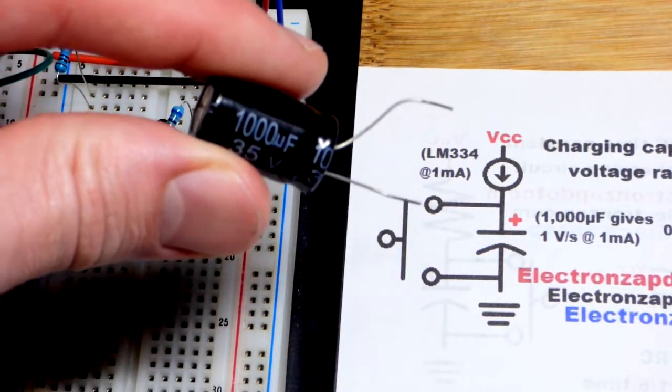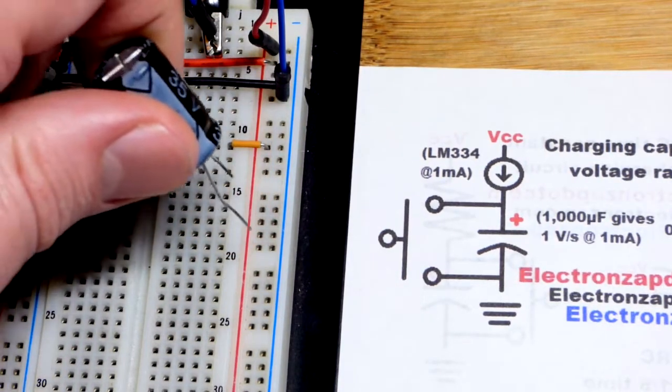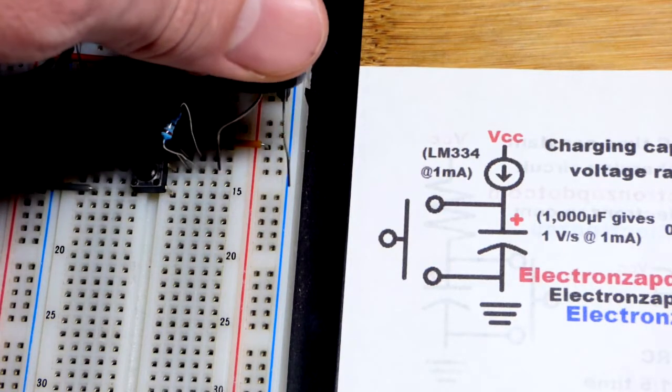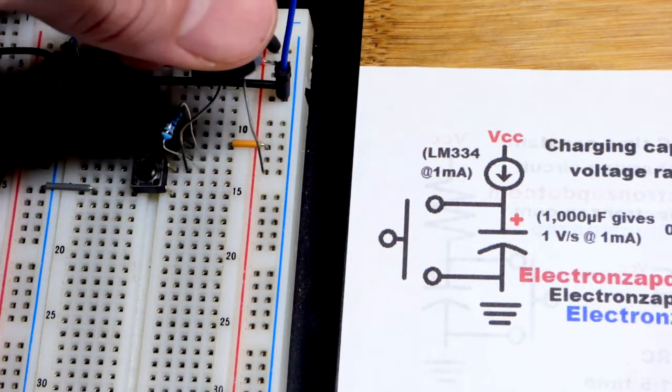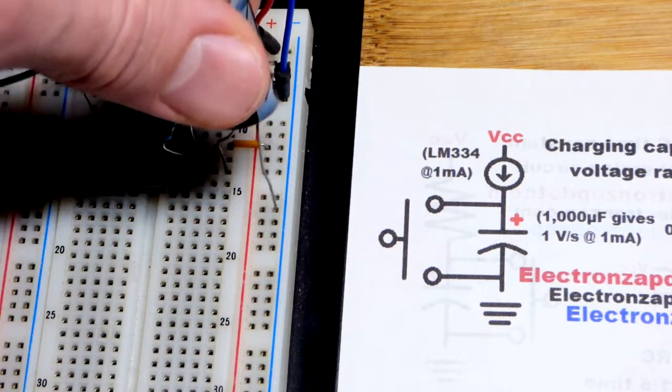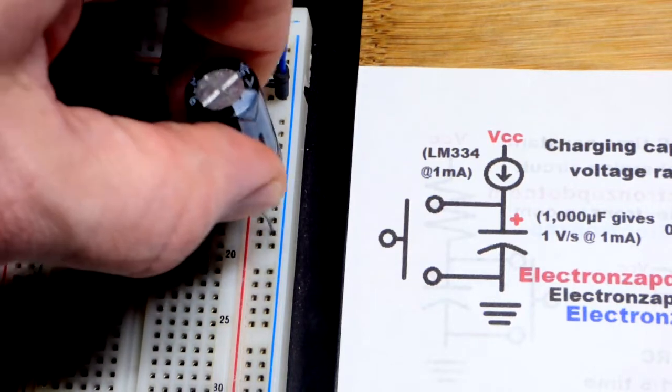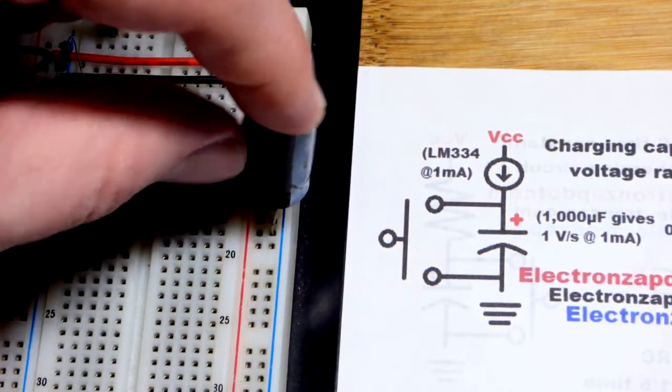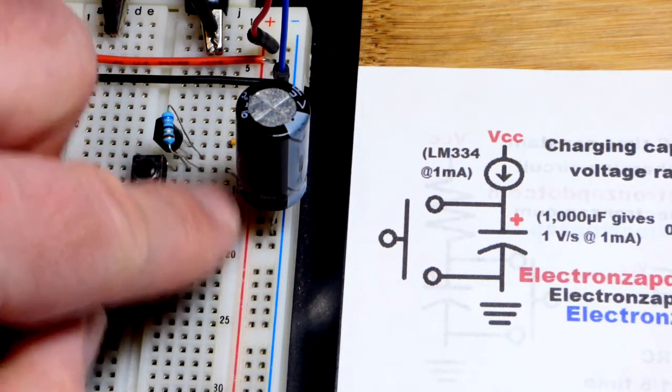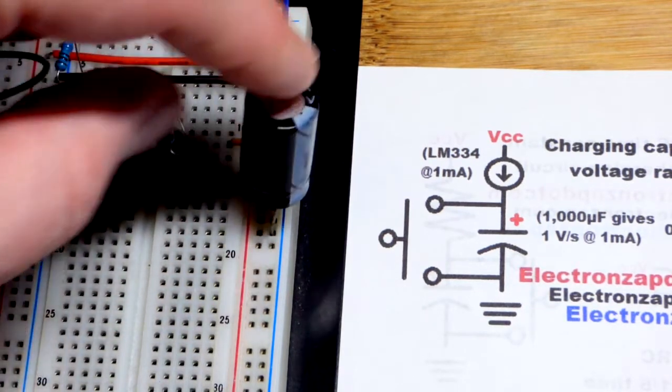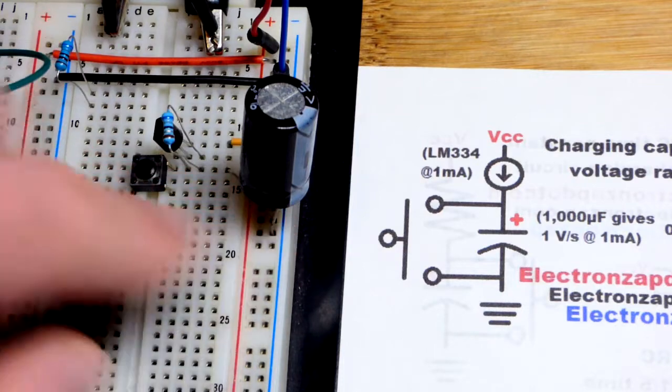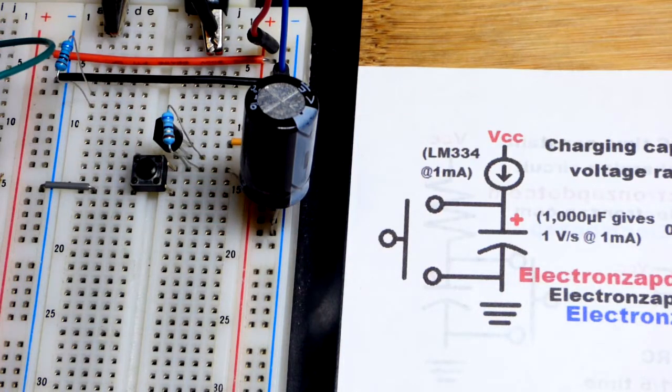And we got the 1000 microfarad capacitor right here. And so we're just going to put the positive side to where the V-minus pin of the current source is, and then the negative side to the negative rail. That means that'll always be either more positive or equal to the voltage that we have at the negative rail. It'll be equal when we press the button. It'll discharge completely.